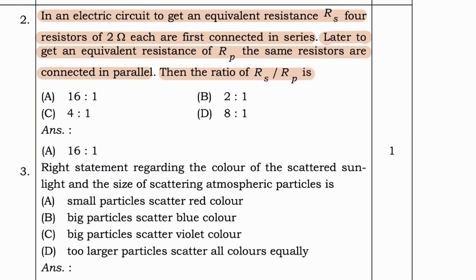First question. In an electric circuit to get an equivalent resistance RS, four resistors of 2 ohm each are first connected in series. Later, to get an equivalent resistance of RP, the same resistors are connected in parallel. Then the ratio of RS bar RP is.